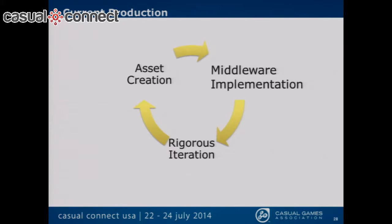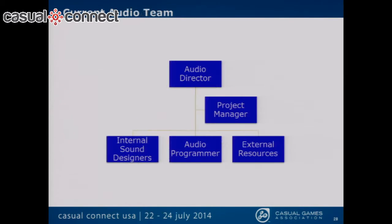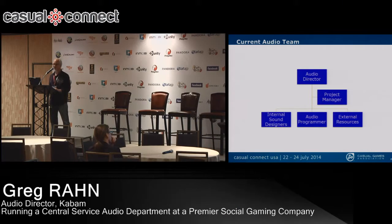Here's what our production currently looks like: we create assets, use middleware to implement, then do a ton of testing because we can — we're right there in the game. We run the build, change sounds, swap them out, change levels, reauthor them, bring them back in, and continue this cycle until we think it's really great, then upload to the game team. Here's the org chart of the current audio team: we have internal sound designers and now an audio programmer as well, which is really important because the audio programmer is dedicated to the audio team and all audio tasks rather than being pulled into game team work. We also have a project manager and external resources.